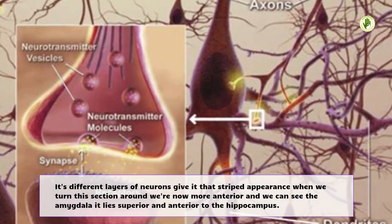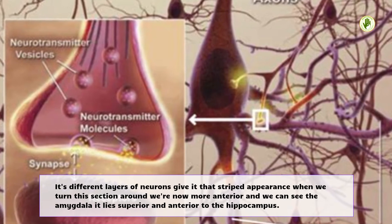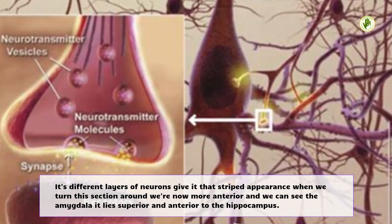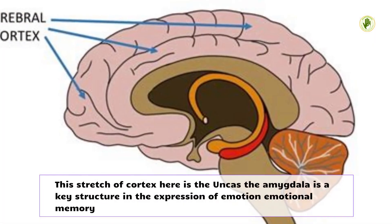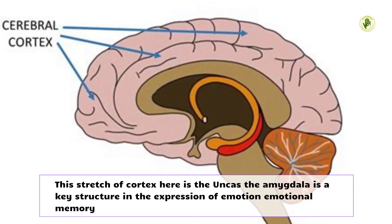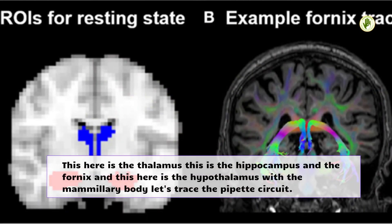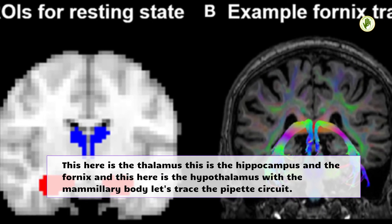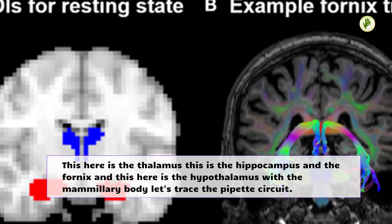Its different layers of neurons give it that striped appearance. When we turn this section around we're now more anterior and we can see the amygdala — it lies superior and anterior to the hippocampus. This stretch of cortex here is the uncus. The amygdala is a key structure in the expression of emotion and emotional memory. This here is the thalamus, this is the hippocampus and the fornix, and this here is the hypothalamus with the mammillary body.